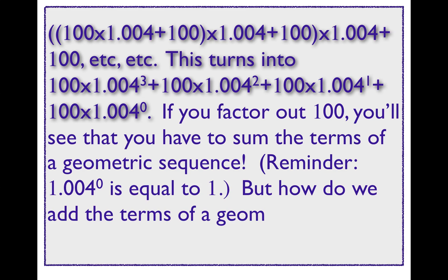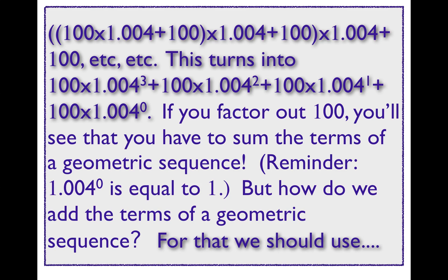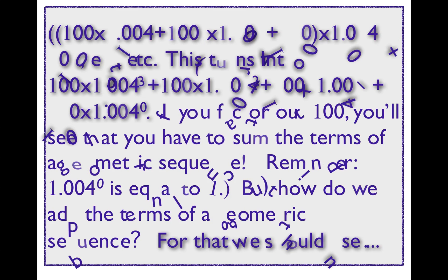You factor out the 100 and you have a geometric sequence. So don't forget, 1.004 to the power 0 is equal to 1. How do we add the terms of a geometric sequence? For that, we should use Wolfram Mathematica.